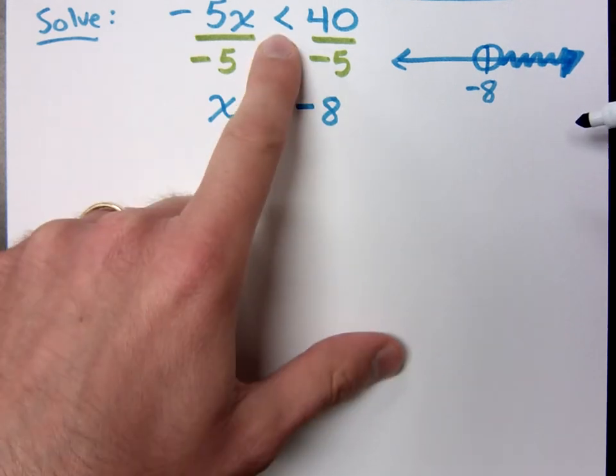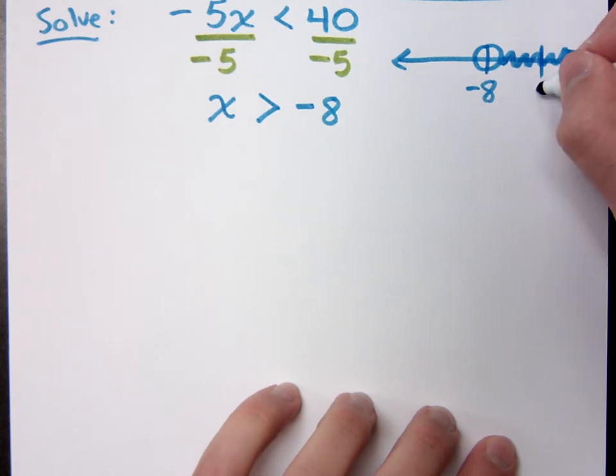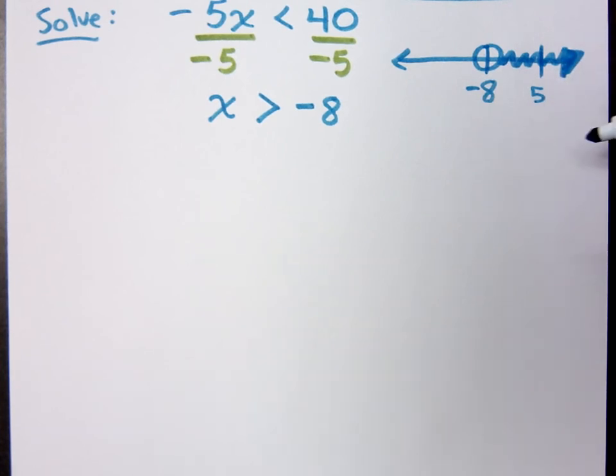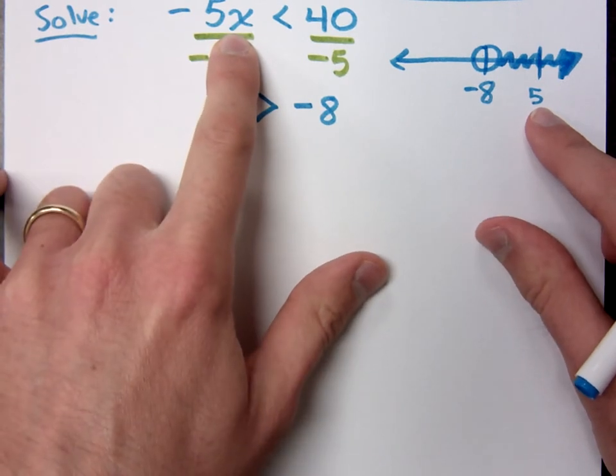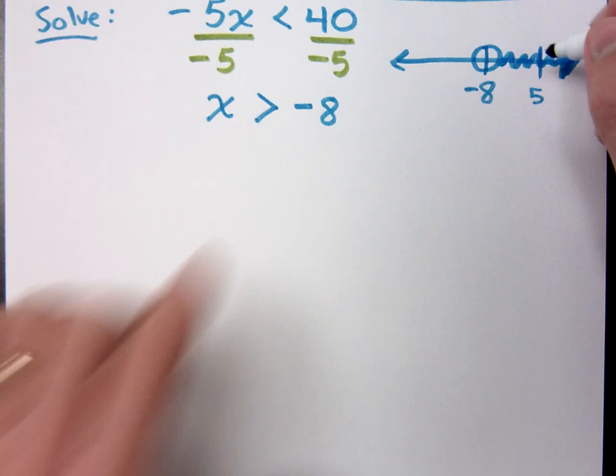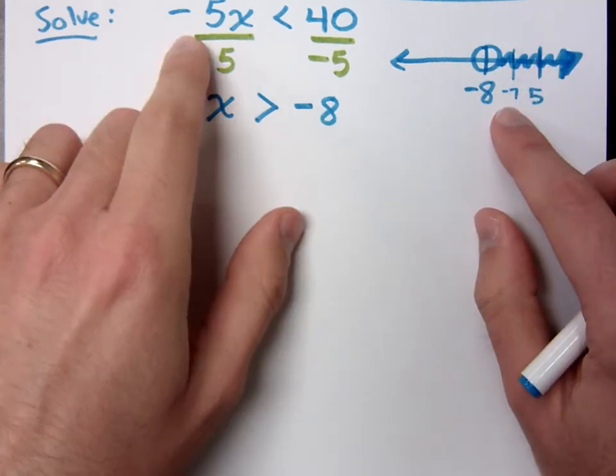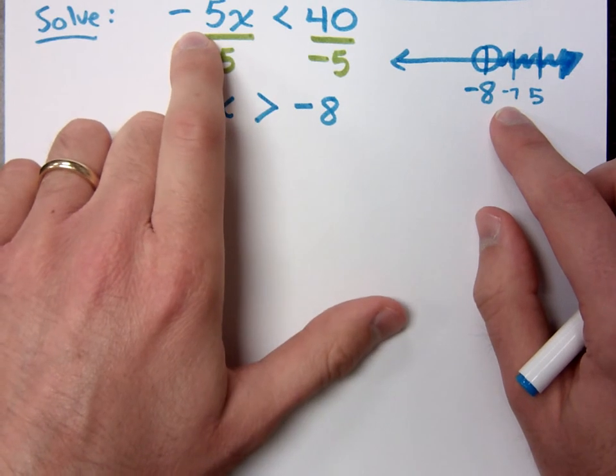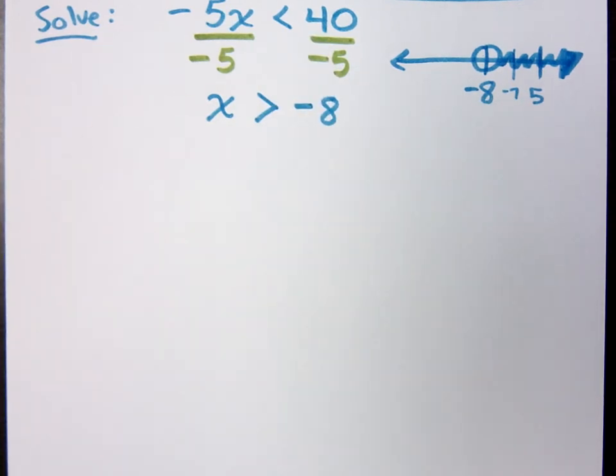But the original inequality was less than. Yes, but watch this. Pick a number over here that's greater than negative 8. 5? It's going towards 0. Yeah, or past 0, right? So let's plug in 5. What's negative 5 times 5? Negative 25. Is negative 25 less than 40? Yes. Is that just if it's a negative answer? Then you flip the side. Not if it's a negative answer. It's what you're dividing by. You're dividing by negative 5. If I pick something over here like negative 7, negative 5 times negative 7 is positive 35. Is positive 35 less than 40? Yes. So if I had not changed the direction of inequality, nothing would have worked.